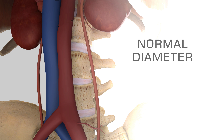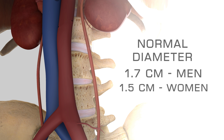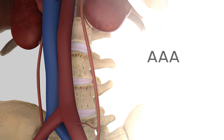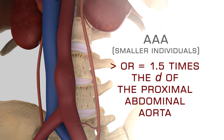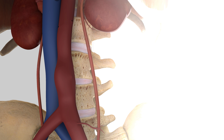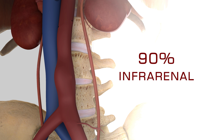The normal infrarenal diameter of the abdominal aorta is approximately 1.7 cm in men and 1.5 cm in women 50 years or older. Abdominal aortic aneurysm, or triple A, is a dilatation of the abdominal aorta to a diameter of 3 cm or more. In small statured individuals, an abdominal aortic aneurysm is a dilatation that measures greater than 1.5 times the normal diameter of the proximal abdominal aorta. Ninety percent of triple A's are infrarenal.